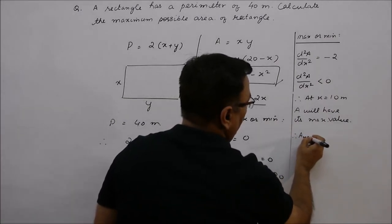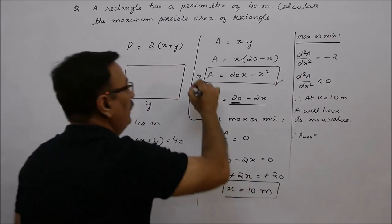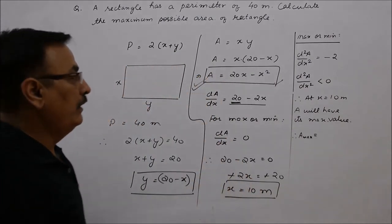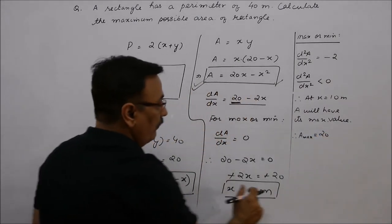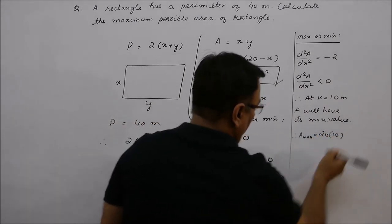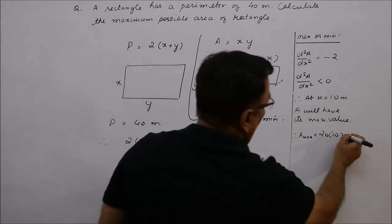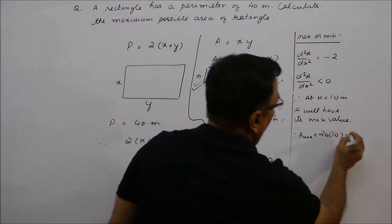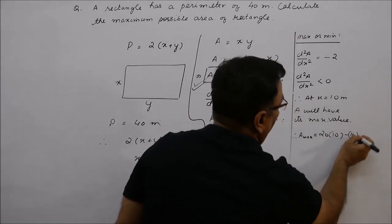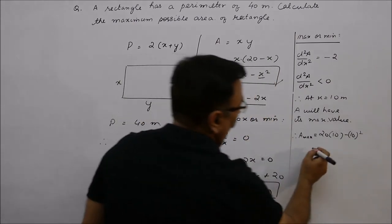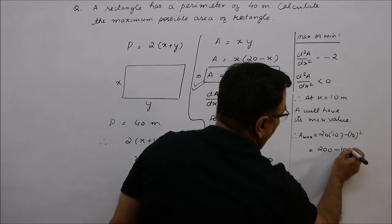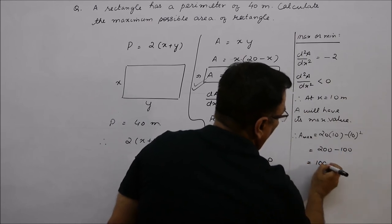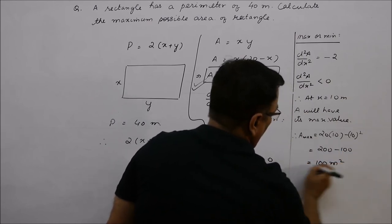A max will be equal to this expression. So, here, you have 20 times 10 minus 10 squared. So, next step, 200 minus 100, that will give you 100 meter square.